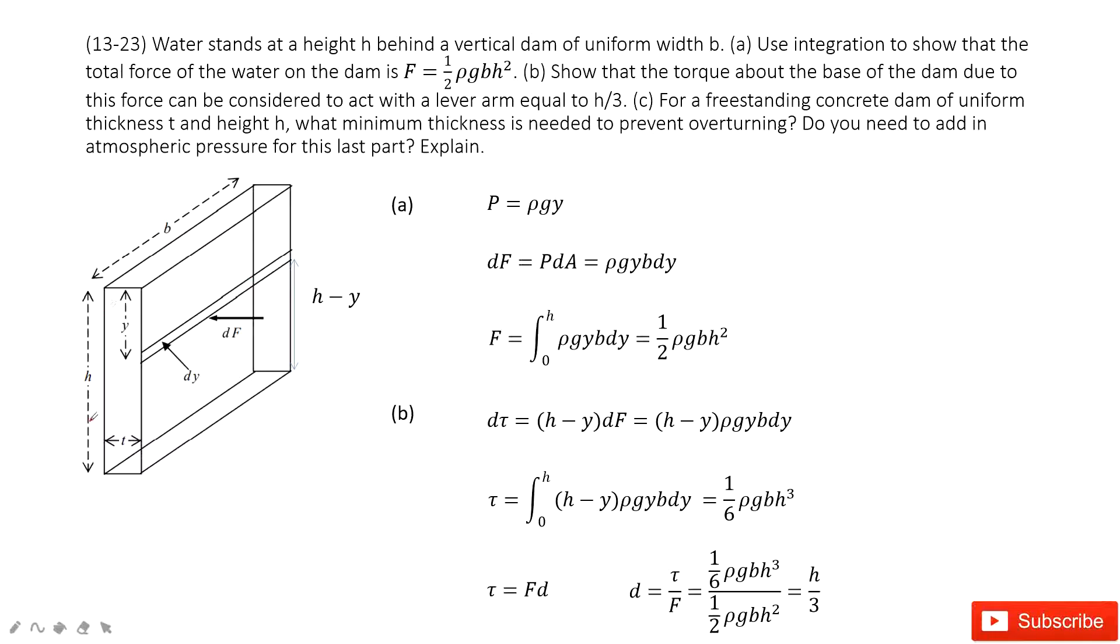It's h, the height, and b and t, so this is three dimensions. Now first, we need to show that the total force of the water at the dam is F. So we prove this equation. How can we do that? We can see the water keeps pushing on the dam in this way.